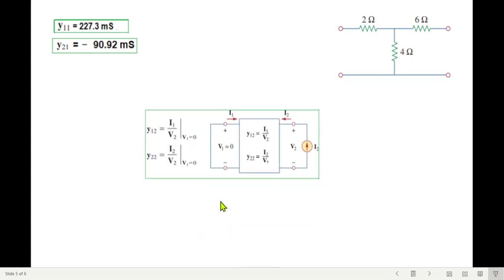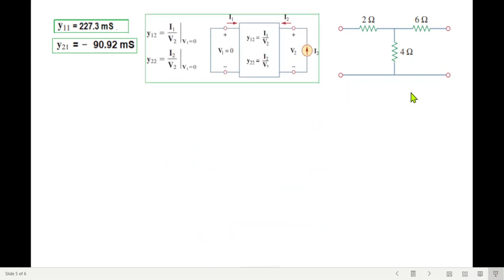Now for the other two, we'll move to the right-hand side. We'll move the source to the right-hand side and short circuit the left-hand side. So the source is here now, i2, and this is short-circuited. Same technique. Now you can see these two are in parallel.